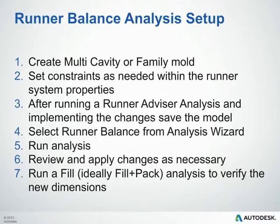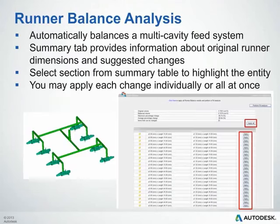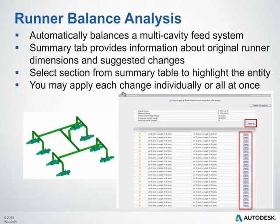Once the runner balance analysis completes, the summary tab will pop up along the bottom of your user interface — it looks much like the runner advisor analysis results. This summary tab provides information about the original runner dimensions as well as the suggested changes. From here, you can select a section from the summary table to highlight the entity, and you can also apply changes individually or all at once by clicking the button to the right of the table.